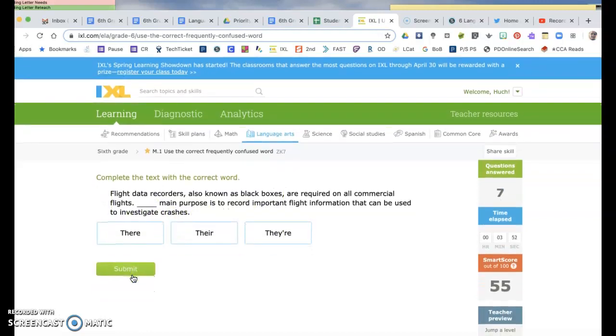Flight data recorders, also known as black boxes, are required on all commercial flights. Their main purpose is to record important flight information. So what purpose do they own? There for owning is this one. This one means they are, and this one is a location, like over there. So this one is the one that shows ownership.